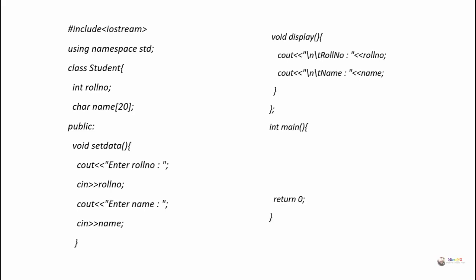In the main method, we first create an object for the Student class. An object is created by writing the class name followed by a variable name — that variable name acts as the object. Here the class name is Student and the object name is obj. Using this object we can call all the public methods of the class: setData and display. We call setData using the dot operator — obj.setData() — to assign values for role number and name. Then we call obj.display() to display those values.